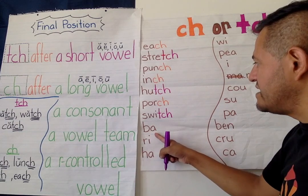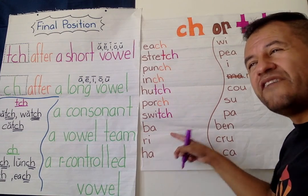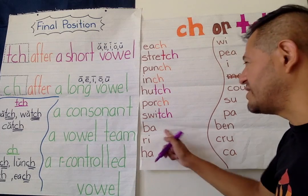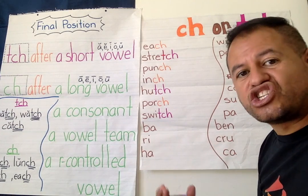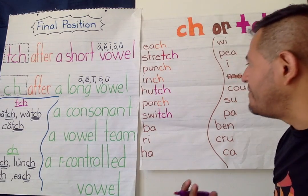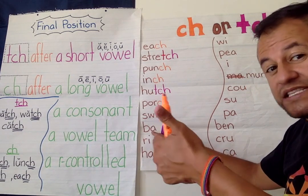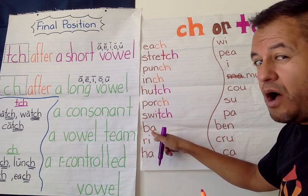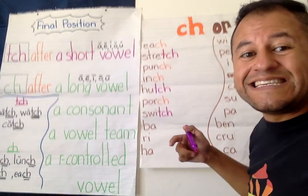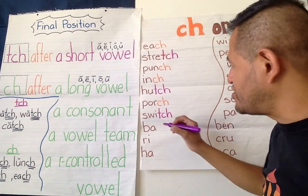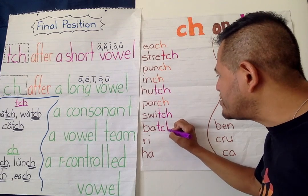B-A — "batch." Here's my A — it's a vowel. Short or long? A, apple — short. We're going to use T-C-H. "Batch" — I have a new batch of apples.